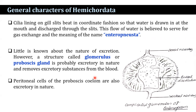Little is known about the nature of excretion; however, a structure known as the glomerulus, also called the proboscis gland, is probably excretory in nature and removes excretory substances from the blood. Peritoneal cells of the proboscis coelom are also excretory in nature.